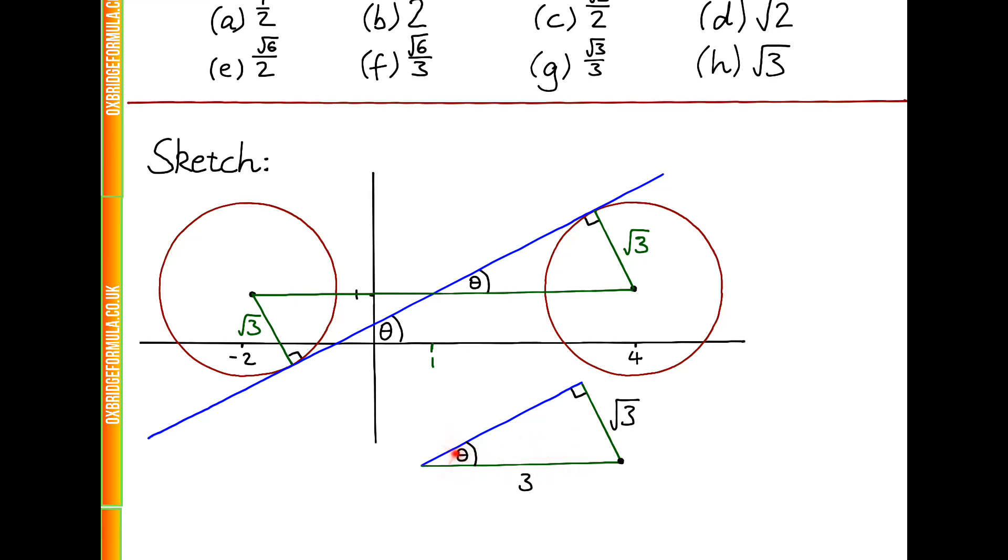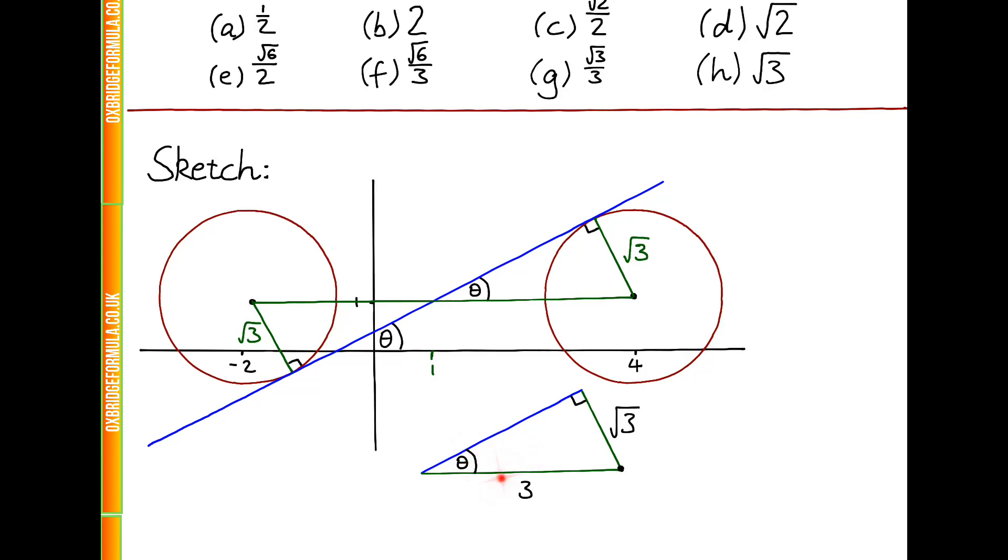So, how can we find tan theta from this diagram? Well, tan theta is opposite over adjacent, so how can we find this length here? Well, since this is a right angle, we can use Pythagoras' theorem, and the square of this length will be the square of this length minus the square of this length.